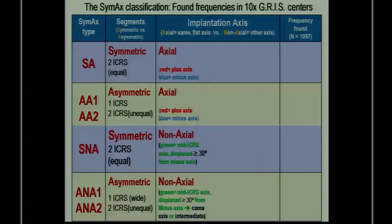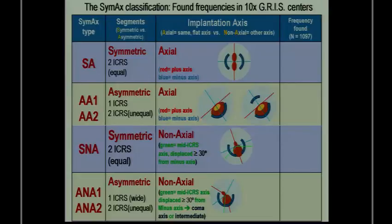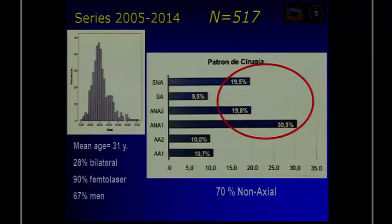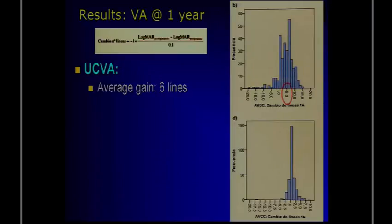This is the classification from a study we presented last year with 1,000 cases. This is the distribution: 10% for the symmetric actual type, the majority asymmetric actual, and then the others with lower numbers. You also see a larger group of non-actual. The problem is where to put the threshold between actual and non-actual. Regarding age distribution, one group is around 30 years of age — a different group than in cross-linking — mainly males.